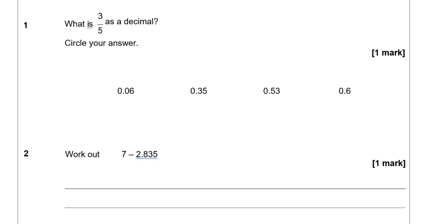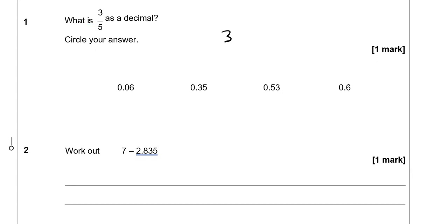What is 3 fifths as a decimal? 3 fifths is the same as 6 tenths, which is 0.6. So that's the answer.